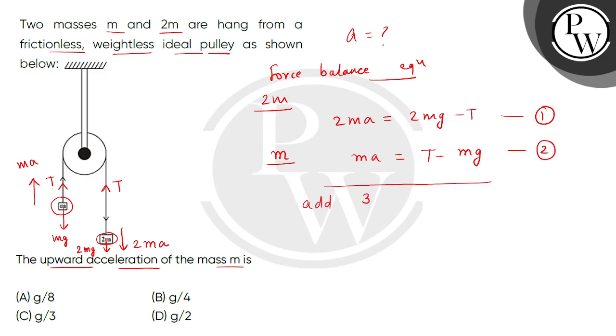So, left side will be thrice M A and right side will be M G. M M will cancel. So, acceleration will be G divided by 3. So, correct answer will be option number C.